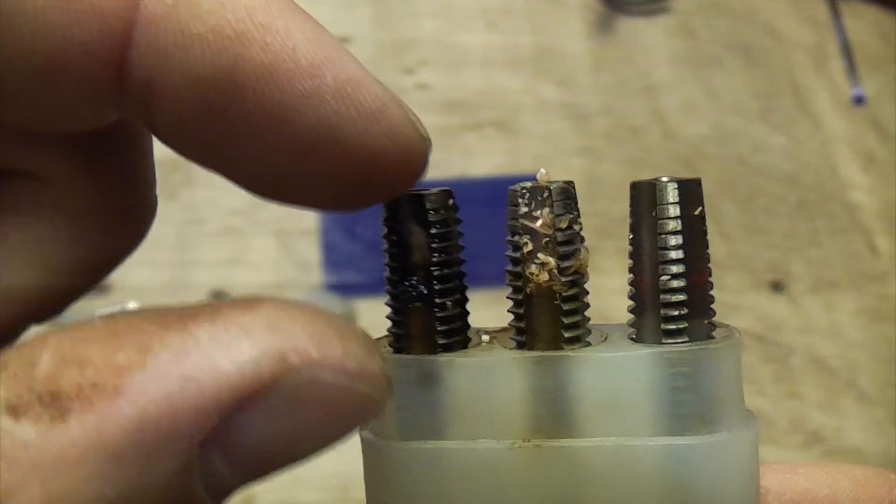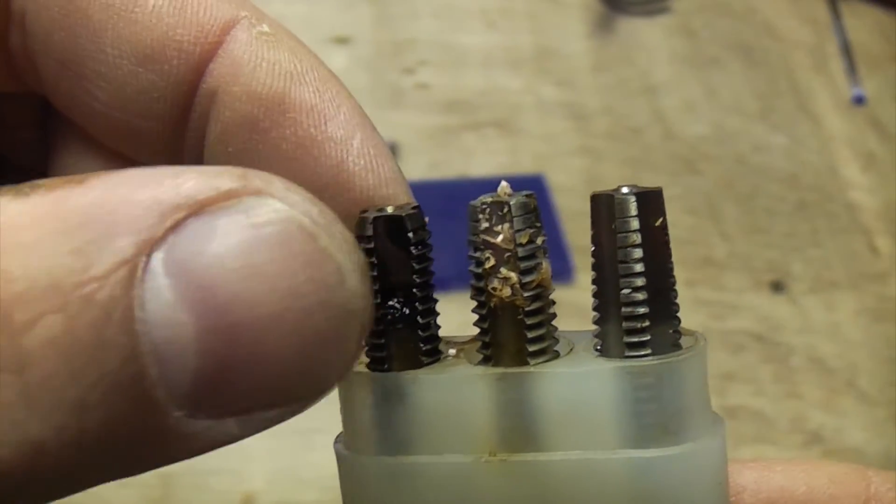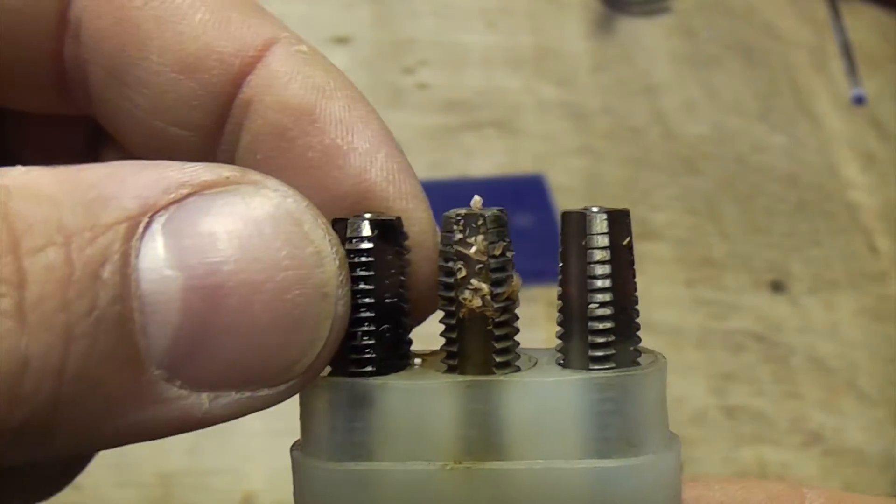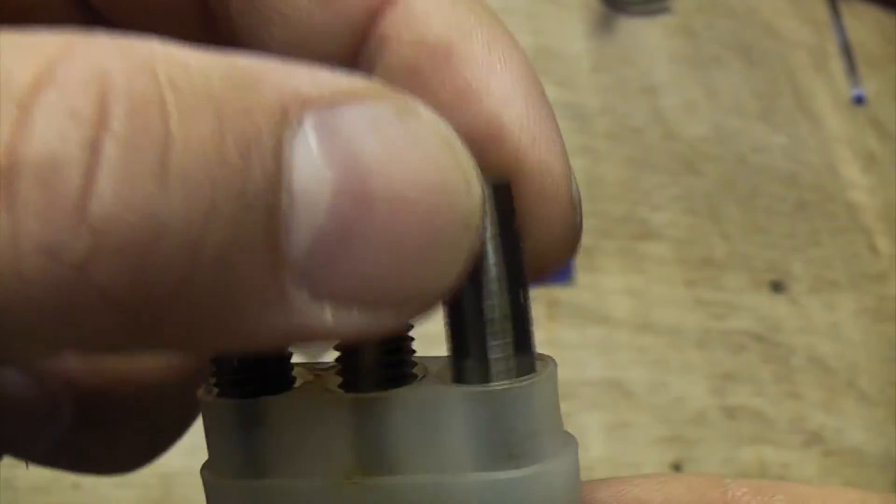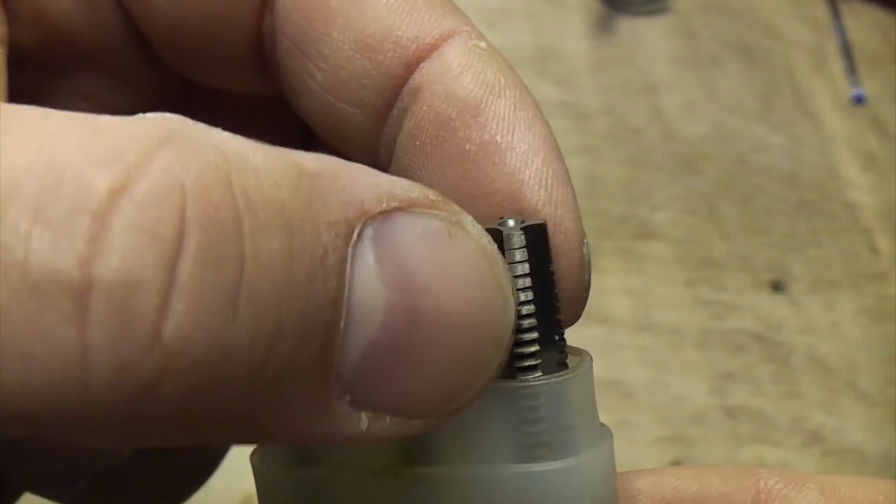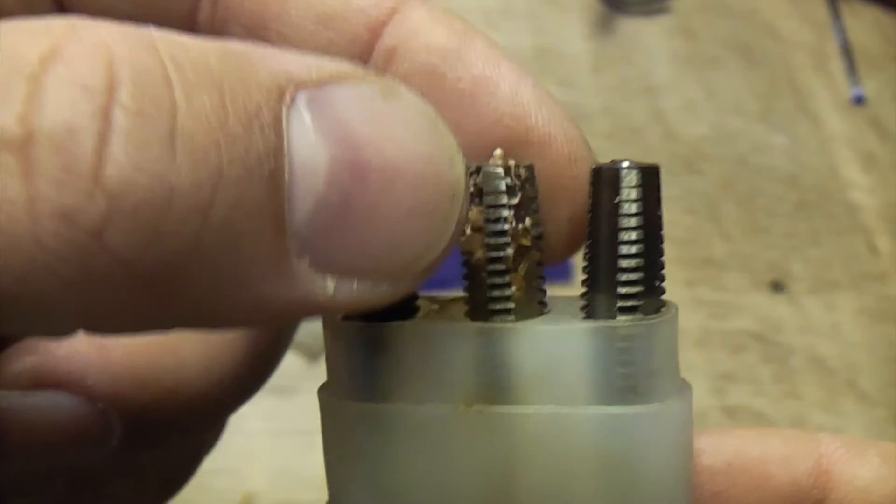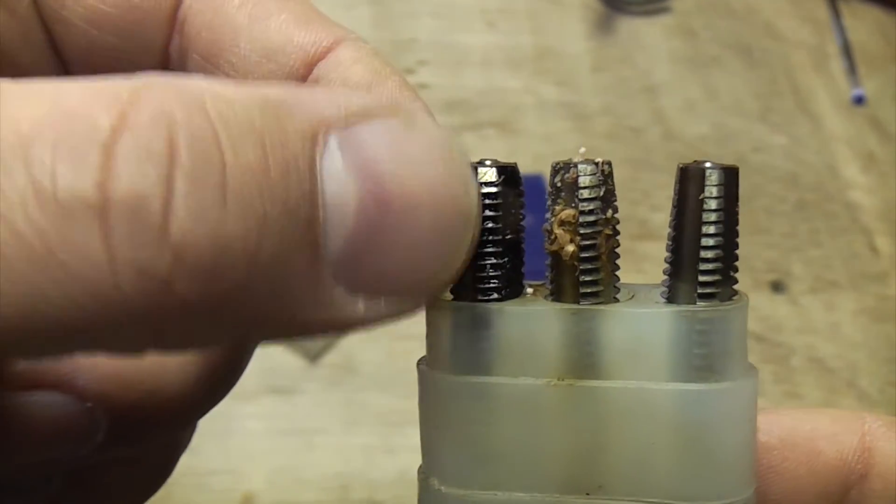I'm pretty sure you can get another one as well that goes a bit further than that, threaded right to the end. So basically that's your tap. You start off with that one because it's got the biggest taper on it, then that one which is the intermediate, and then that one.